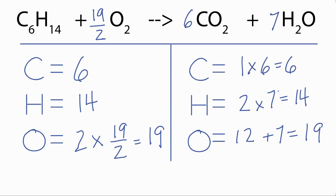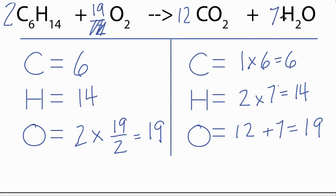You may want your coefficients to be whole numbers. The way to do that, multiply both sides by two. So we'd put two here, two times 19 over two, that gives us 19. Two times six, that's 12. And two times seven, that would be 14.